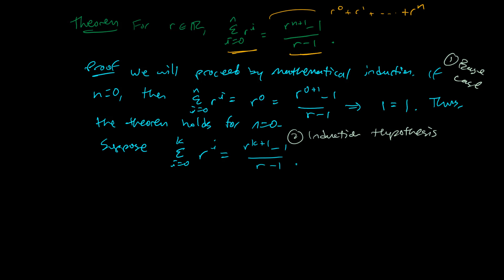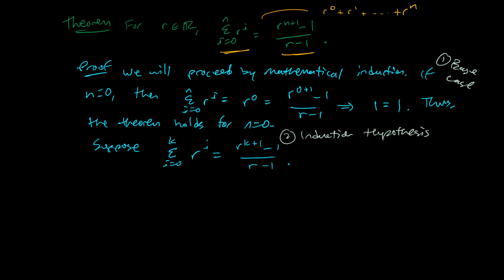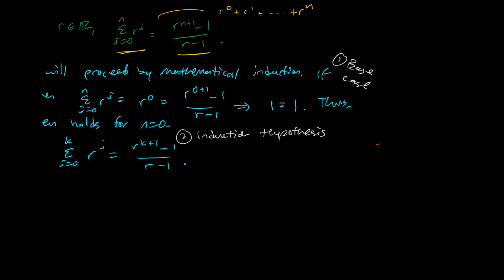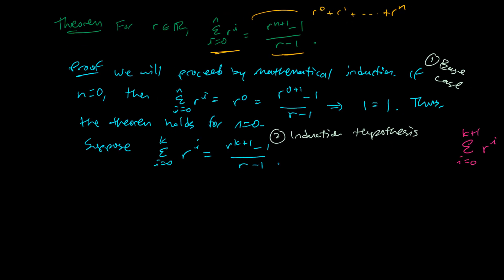I need to somehow use this information to get to the next instance in my series. And we might want to think about what that looks like. That would be something like this. We'd want to go to k plus 1 power in our series, and we'd end up with r to k plus 2 minus 1 over r minus 1. And that's what I'm hoping to get to. Let's see if we can actually get there.